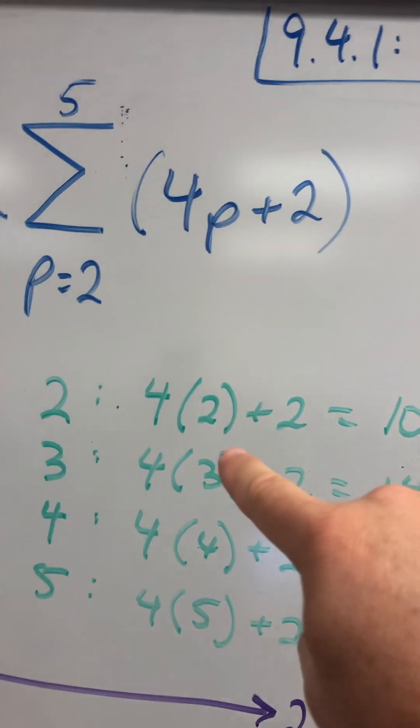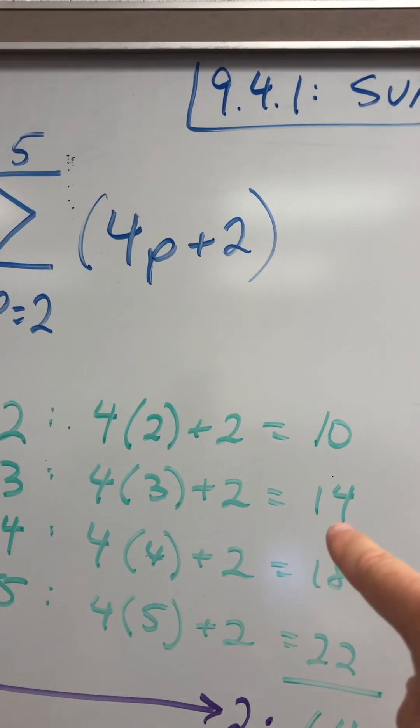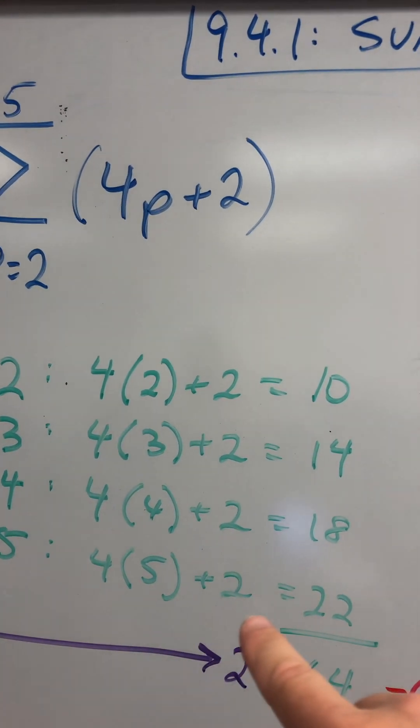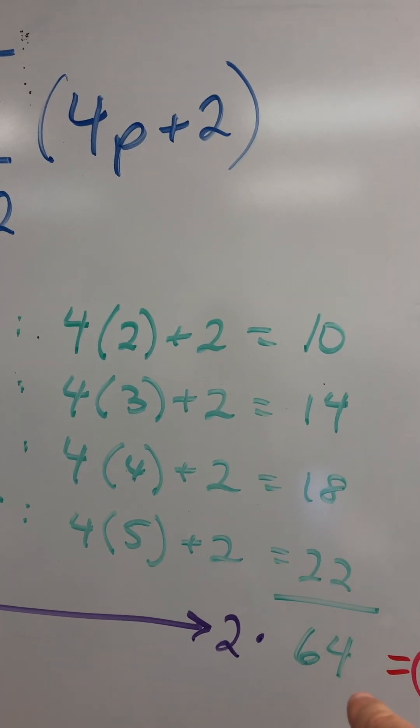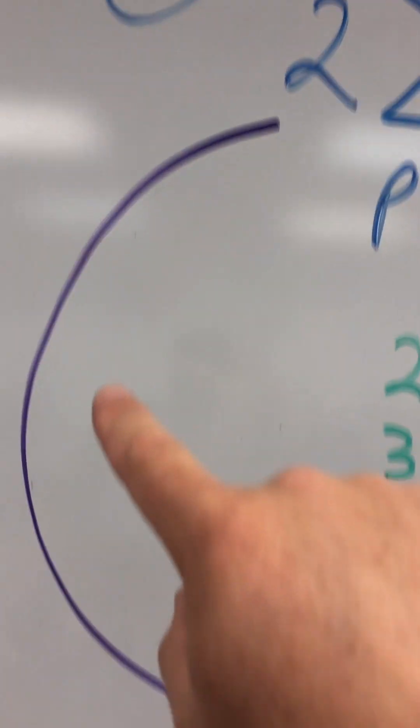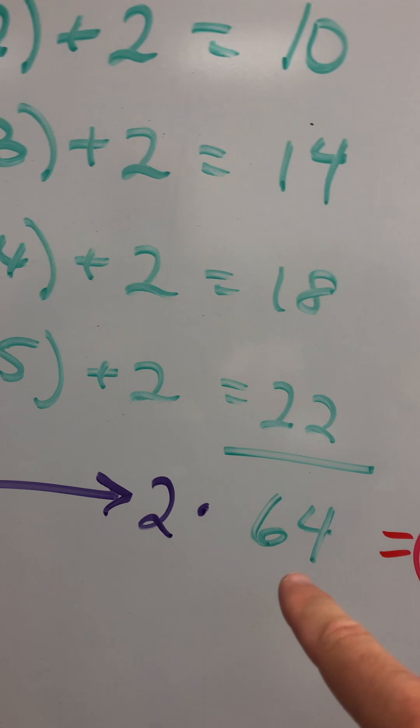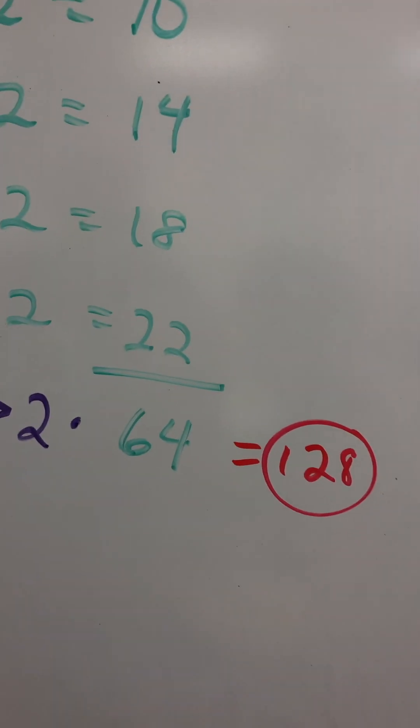What's four times two plus two? Ten. Four times three plus two? Fourteen. Four times four plus two? Eighteen. Four times five plus two? Twenty-two. Add those together, you get sixty-four. Remember that two over here? We're going to take that and multiply two times the answer to get 128. So 128 is your final answer.